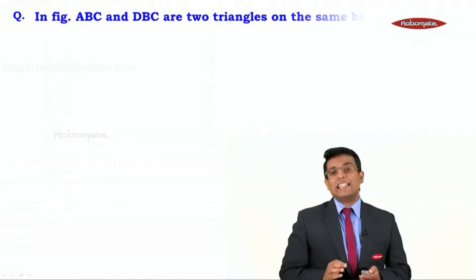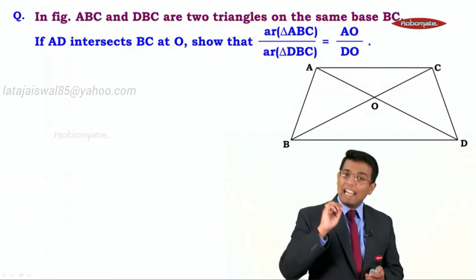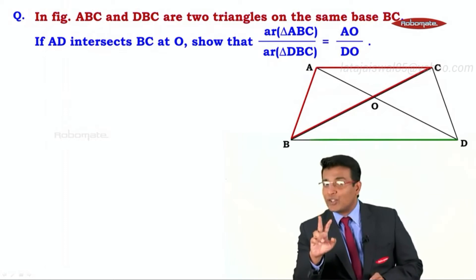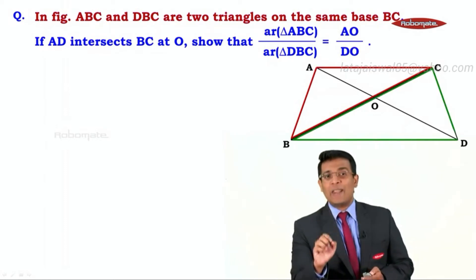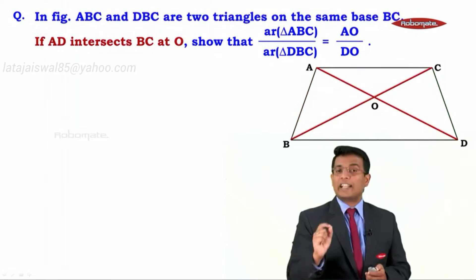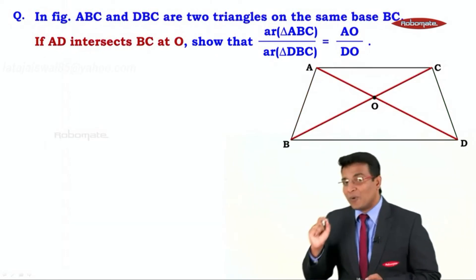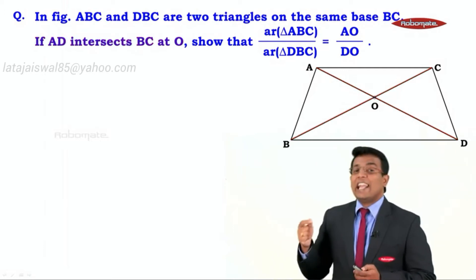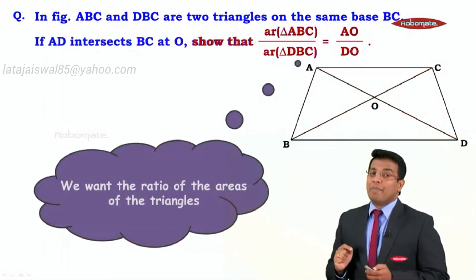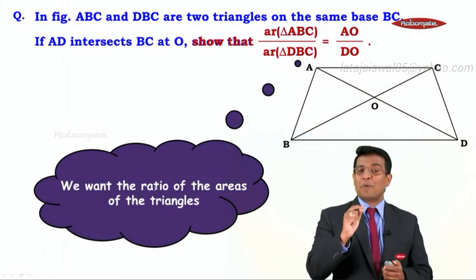We are going to do a very important and interesting problem. In the given figure, ABC and DBC are two triangles on the same base BC. If AD intersects BC at O, then show that the area of triangle ABC upon area of triangle DBC is equal to AO upon DO.